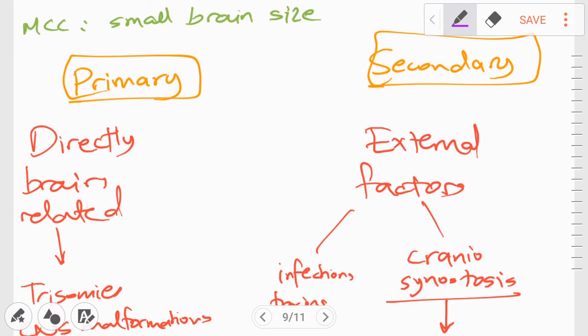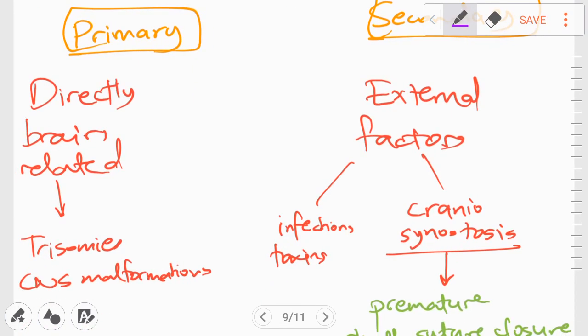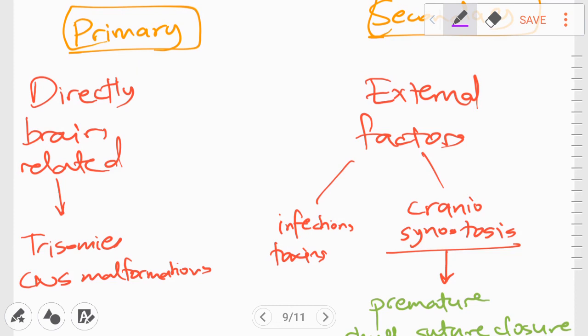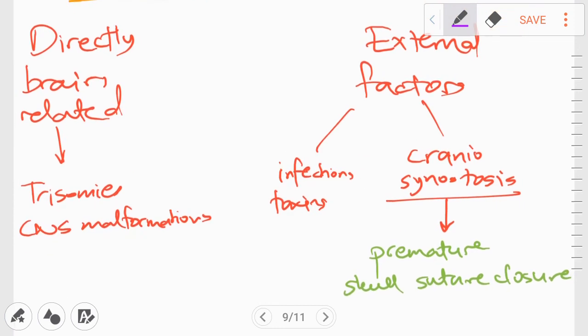The causes are divided into primary and secondary causes. Primary causes refer to the causes which are directly related to the brain. For example, chromosomal disorders like trisomies or CNS malformations or even CNS migrational disorders. And secondary causes refer to the causes which are mostly external factors like infections, toxin exposures, hypoxia, systemic diseases, and a certain type of a disorder which is called craniosynostosis. Craniosynostosis refers to premature skull suture closures. So this can result in a malformed cranium.